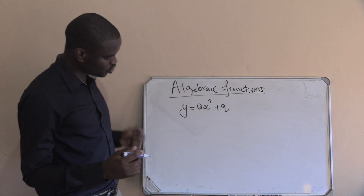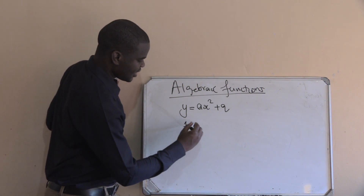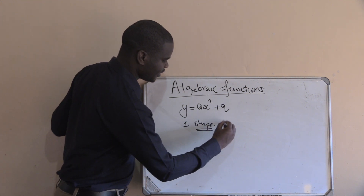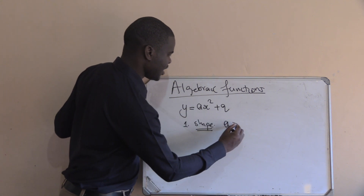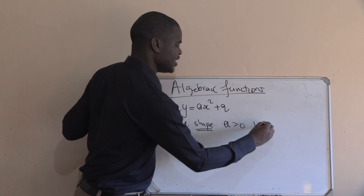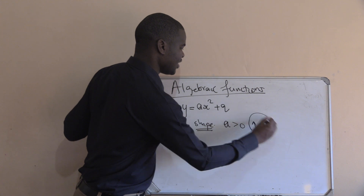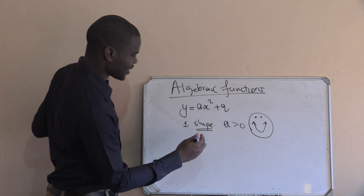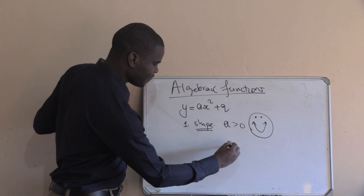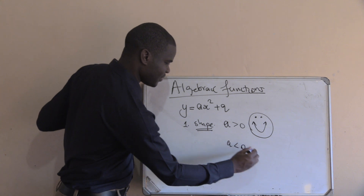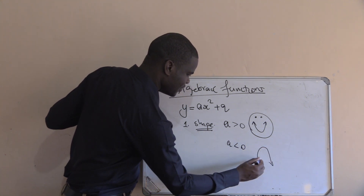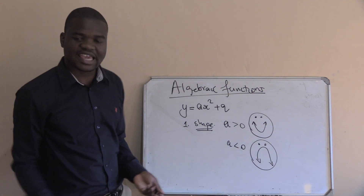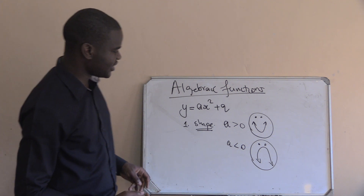What are the things that you need to know? First is the shape of the graph. If the value of a is greater than zero, the graph will be smiley-shaped. If the value of a is less than zero, the shape of the graph will be sad-shaped. Don't forget about these things.